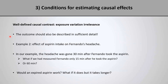Even though we focused on the definition of the exposure, it should also be said that the outcome should be defined in sufficient detail for a well-defined causal contrast. Consider the example of the effect of aspirin intake on Fernando's headache, where the headache was gone 30 minutes after he took the aspirin. It is very important to specify the time, because if we had measured headache status only 15 minutes after the aspirin was taken, perhaps the headache would still be there. We could also ask whether an expired aspirin would work — perhaps it would, but it might take longer, so we would need to redefine the timing of the outcome measurement.